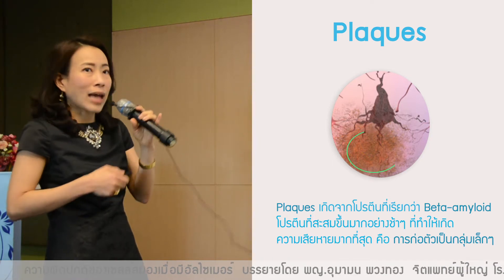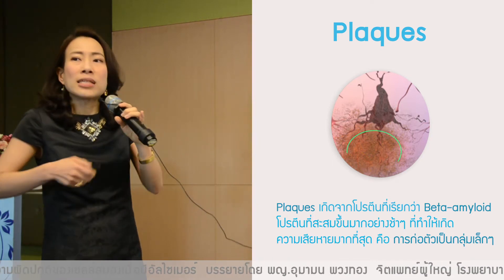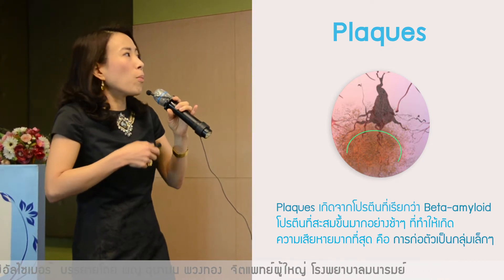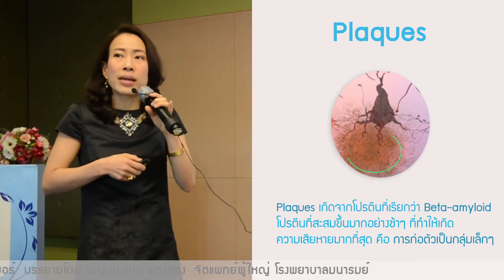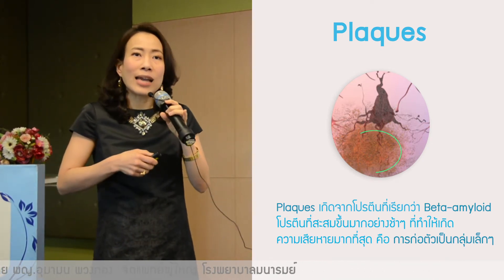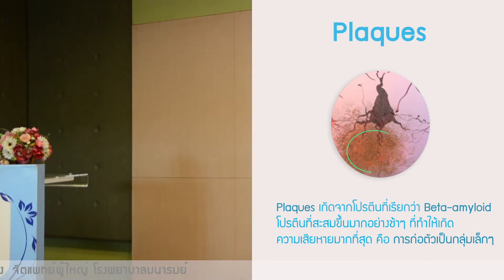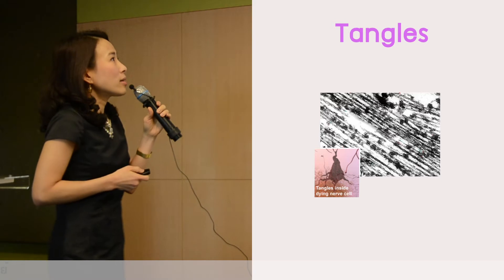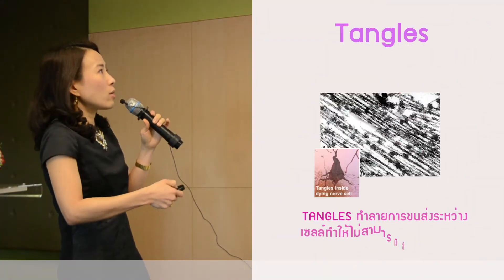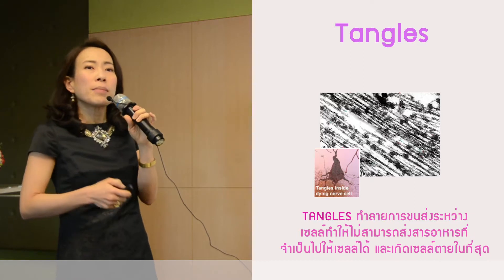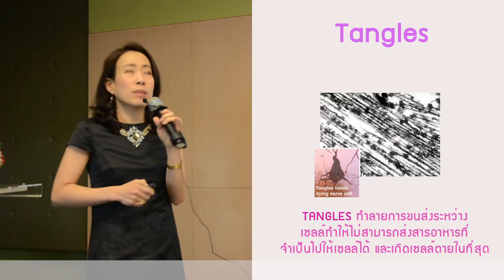When you don't have a microtubule, the microtubule is going to feed the microtubule. This is one of the tangles, formed from the protein that we call Tau Protein, which is the protein found in the cell.